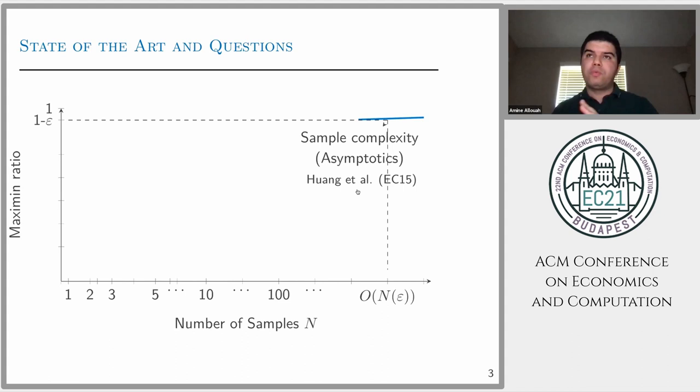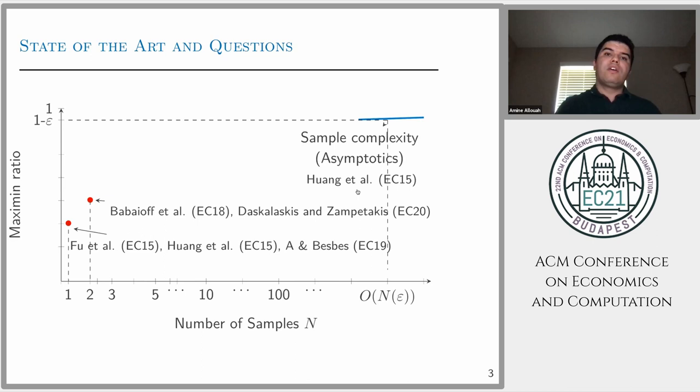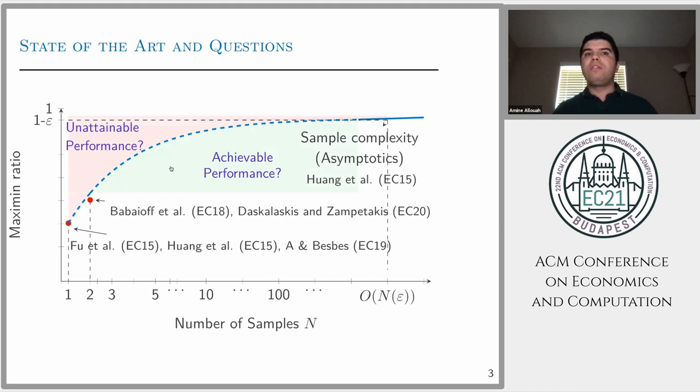The well-understood regime is when we know a lot of data and how we can achieve epsilon away performance. This problem is well-understood. More recently, papers have studied when the seller has access only to one sample or two samples. For the one-sample case, this problem is well-understood. We know what's achievable and the impossibility results. For the two-sample case, we know first achievability results. However, there is all this region between two or above two until infinity, where we don't know any achievability performance. Our work will try to answer this grid region and explore this territory.